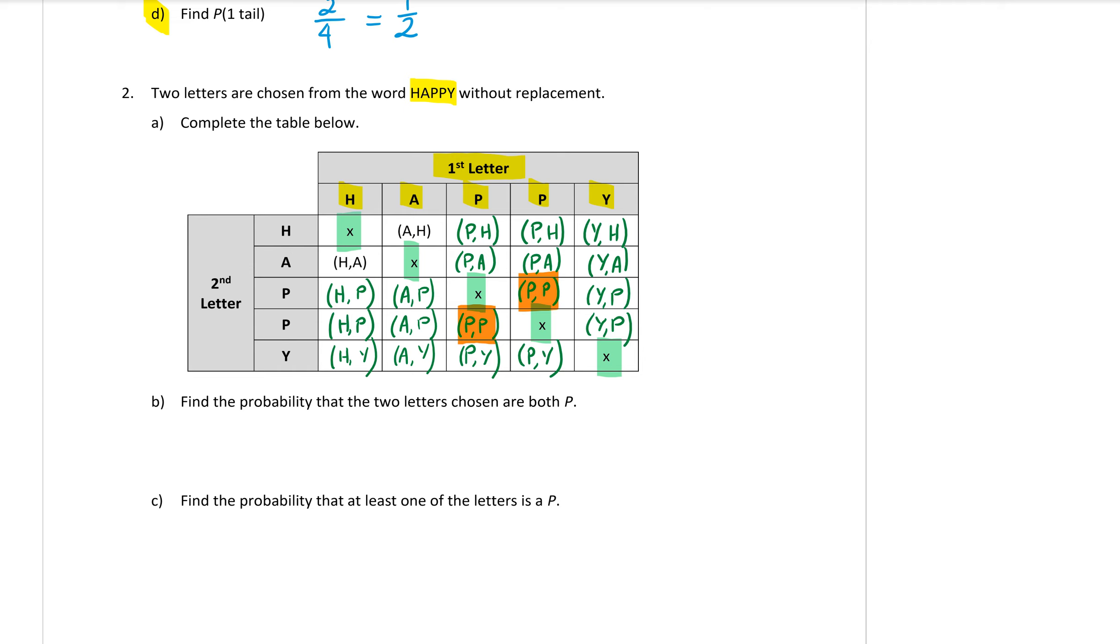So that means that the probability is two out of, now how many different outcomes do we have? Don't count the crosses. Okay, so you go one, two, three, four, five, six, seven, eight, nine, ten, eleven, twelve, thirteen, fourteen, fifteen, sixteen, seventeen, eighteen, nineteen, twenty.